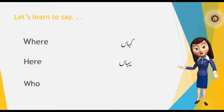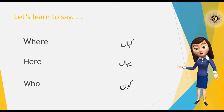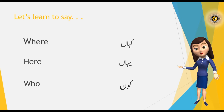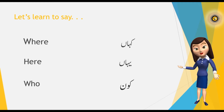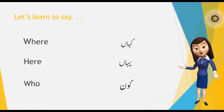In English we say 'who,' and in Urdu it is 'Kaan.' Let's repeat one more time: Where — Kahaan. Here — Yahaan. Who — Kaan.